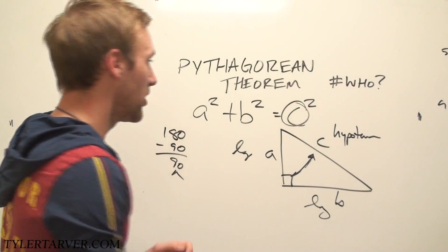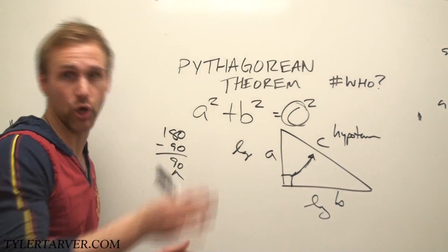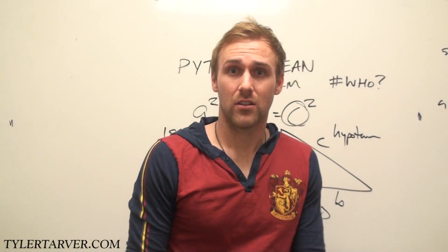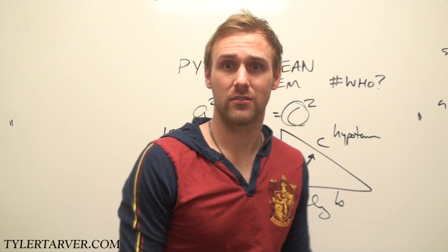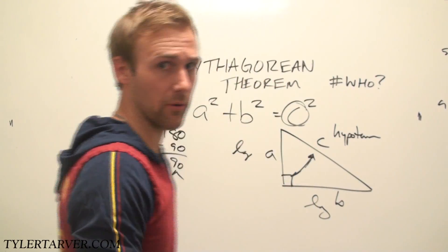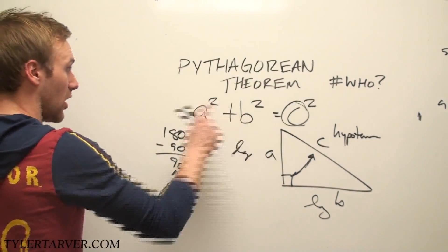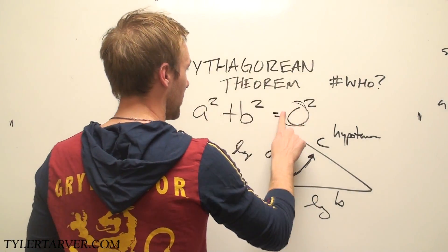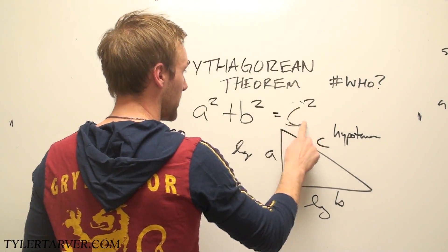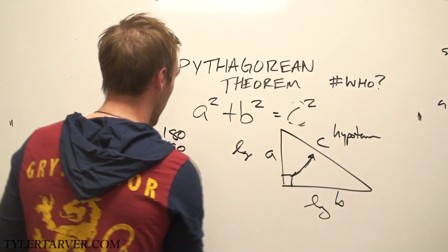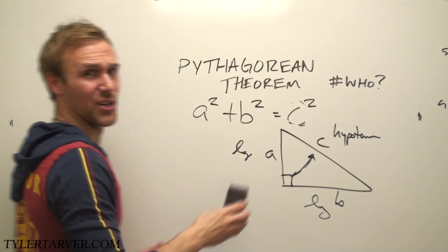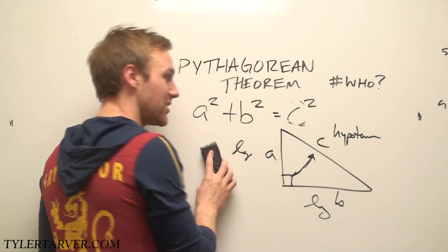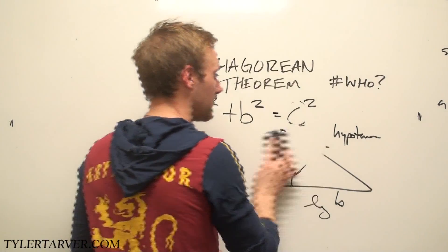Now you're thinking, 'Who cares?' Well, your teacher does, and they're going to grade your paper accordingly. So this is the Pythagorean Theorem: A squared plus B squared equals C squared. How do I apply this? Well, let me tell you, boss.